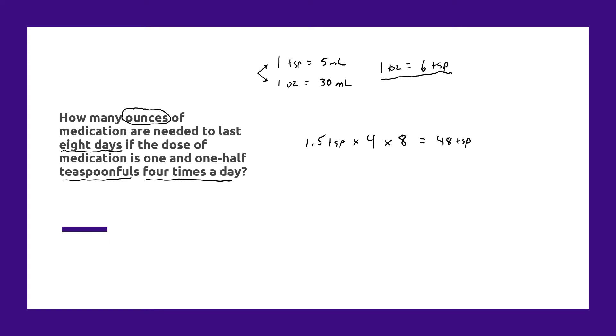But we're not done, because the answer needs to be in ounces. And to figure out what that is in ounces, we can set up a proportion. And we're going to put what we're looking for in the numerator on the right-hand side.